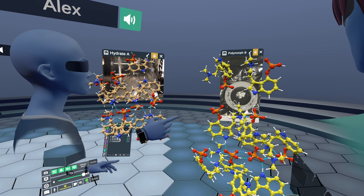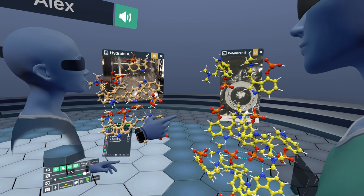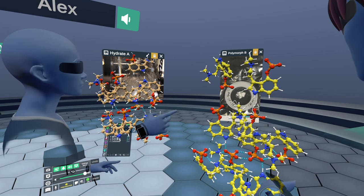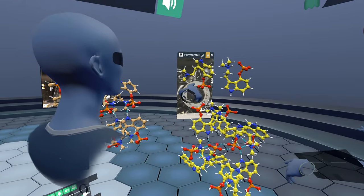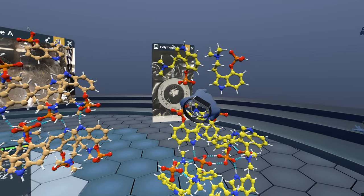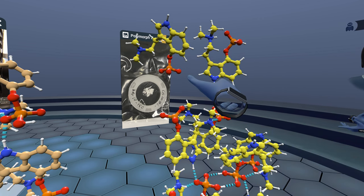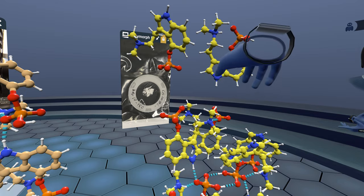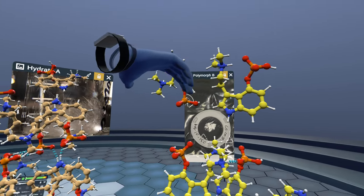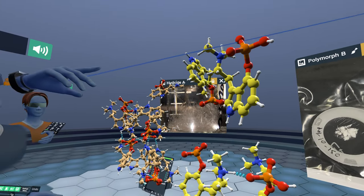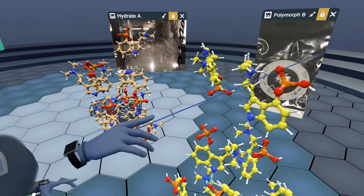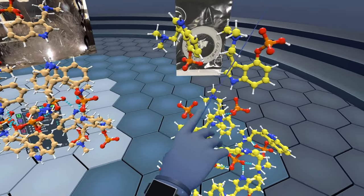First, in polymorph B, the asymmetric unit is comprised of two molecules of psilocybin. So these are distinct from one another. They're in two different conformations. But also that one of the asymmetric unit molecules of psilocybin has an intramolecular hydrogen bond that's holding it in this conformation here.